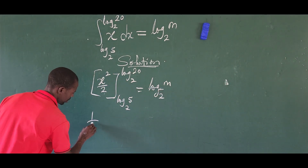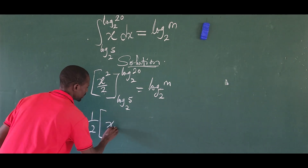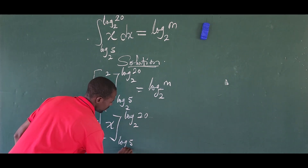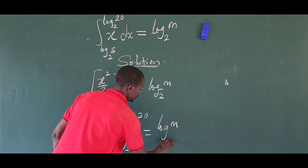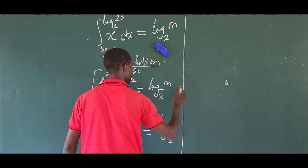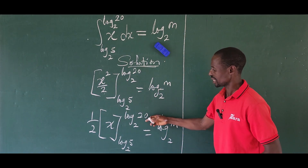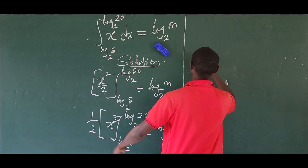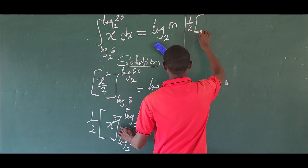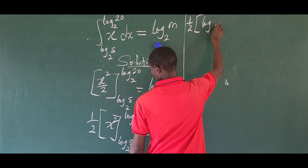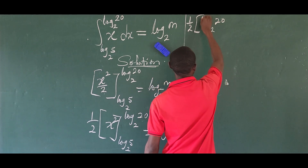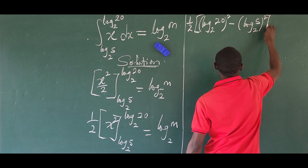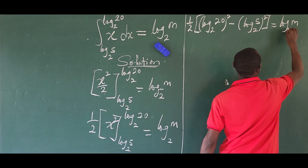Rewriting this, we pull out the one-half so we have one-half times the quantity: the upper limit log 20 base 2 squared, minus the lower limit log 5 base 2 squared. This is all equal to log m base 2.